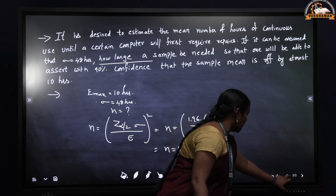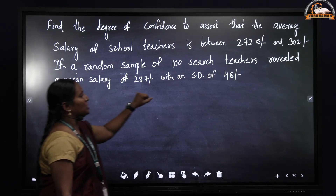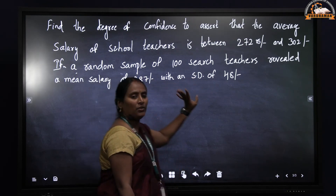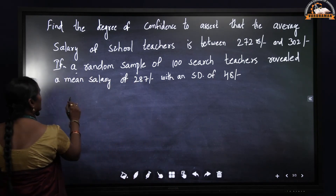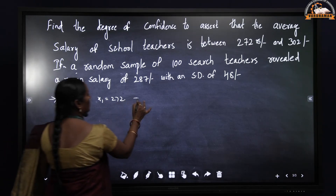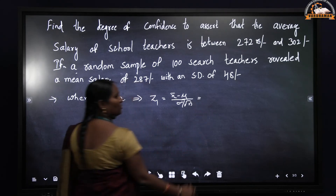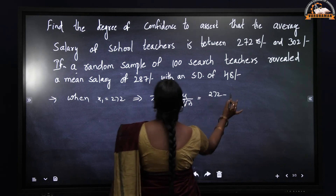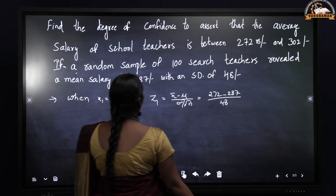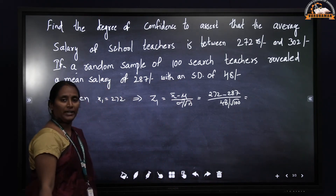Problem 3: Find the degree of confidence to assert that the average salary of school teachers is between 272 and 302 rupees, given a random sample of 100 teachers with a mean salary of 287 rupees and a standard deviation of 48 rupees. When X1 = 272: Z1 = (272 - 287) / (48 / sqrt(100)) = -3.125.